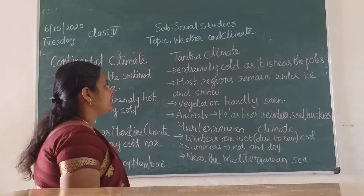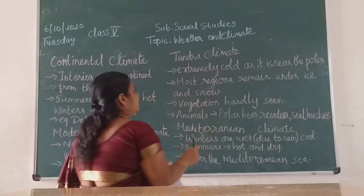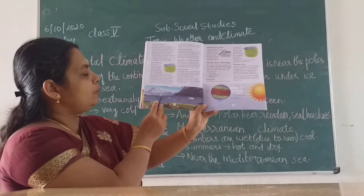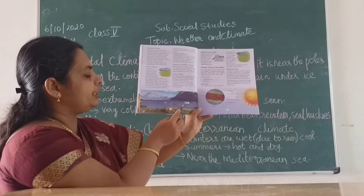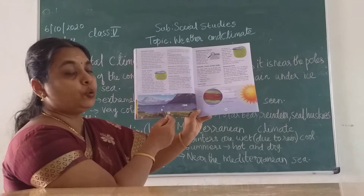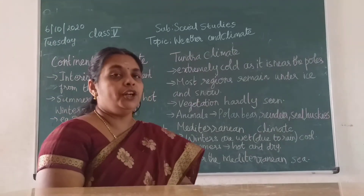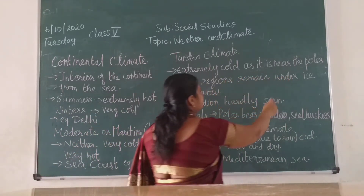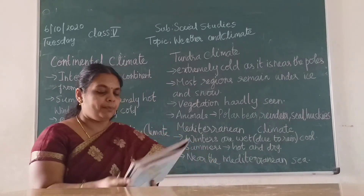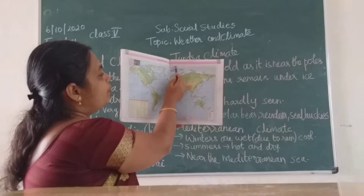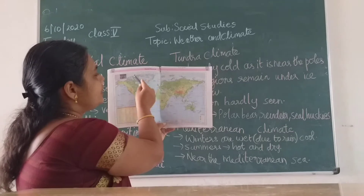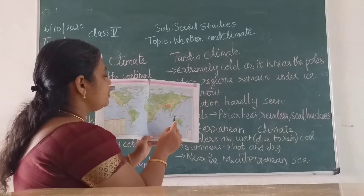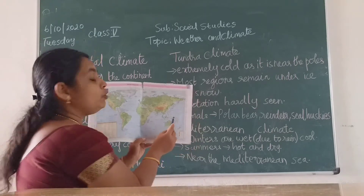The next one is the Tundra region — Tundra climate. In your textbook they have shown a Tundra zone picture. It is almost covered with ice throughout the year. Hardly any plants or trees can be observed — only small grasslands and shrubs. The Tundra regions are extremely cold as they are near the poles, the north pole and south pole. Most regions remain under ice and snow throughout the year.